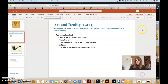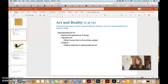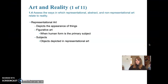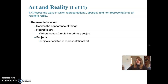Representational art basically depicts the appearance of things. It's really straightforward — if I were to draw my hand, it would represent my hand, and that would be considered representational art. When the human form is the primary subject, that is called figurative art, which falls under the umbrella of representational art but has its own subcategory. It's called figurative art.